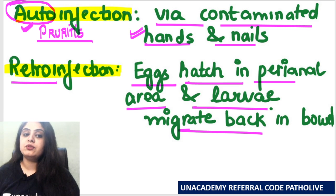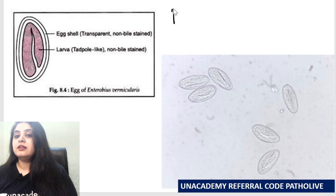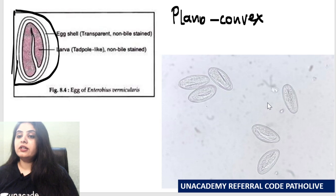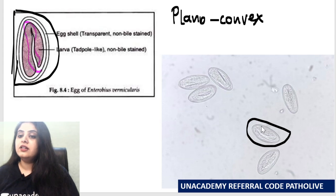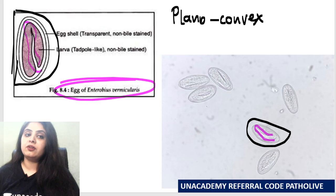As for how the egg looks: it is a classical egg described as plano-convex. One side is a little flat and one side is a little rounded — hence plano-convex. Within it, if you notice, there is a tadpole-like larva. That is the classical egg of Enterobius vermicularis.